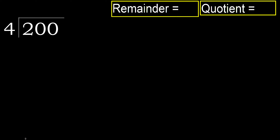200 divided by 4. 2 is less than 4, therefore next: 20 is not less.